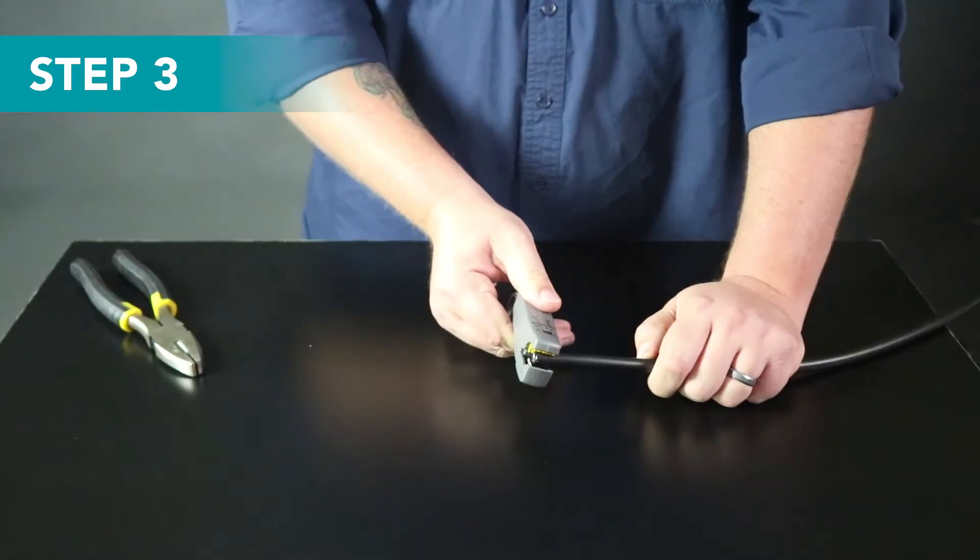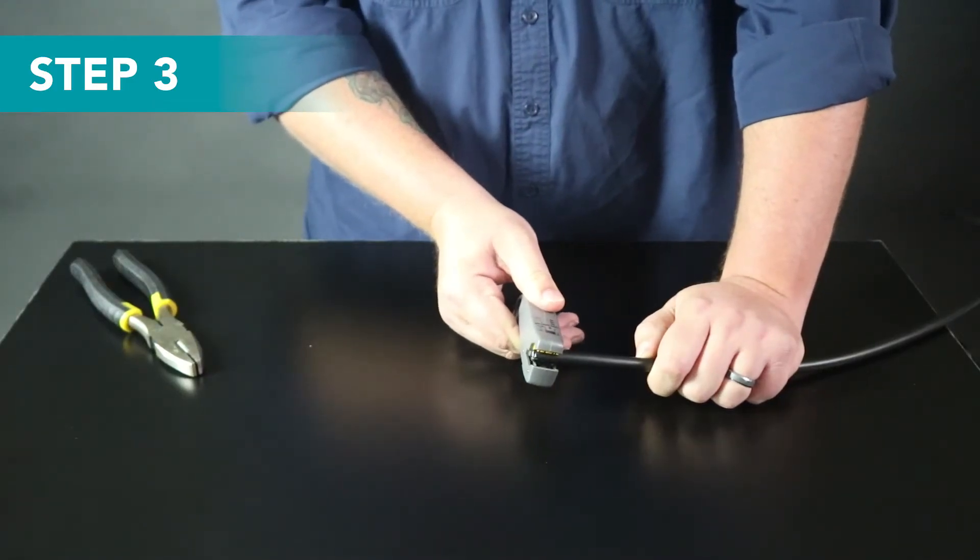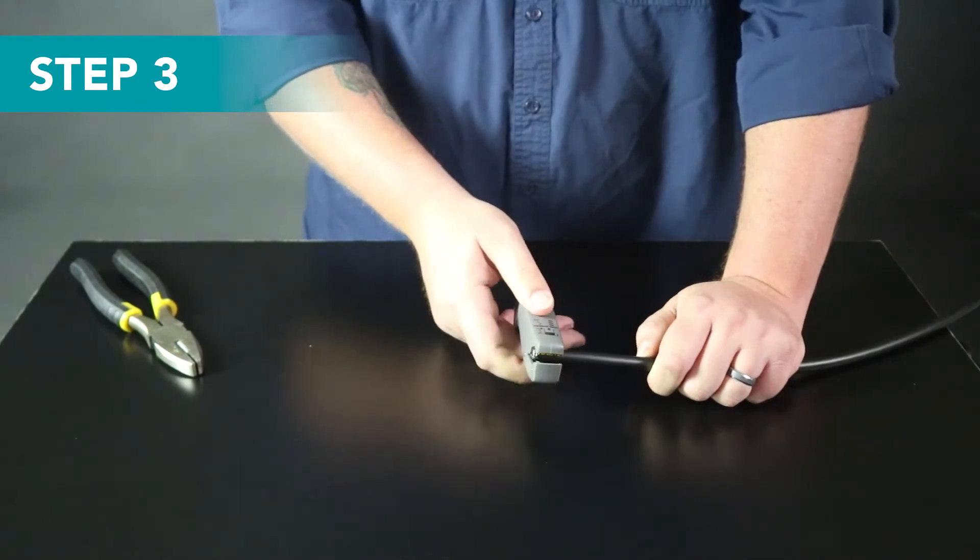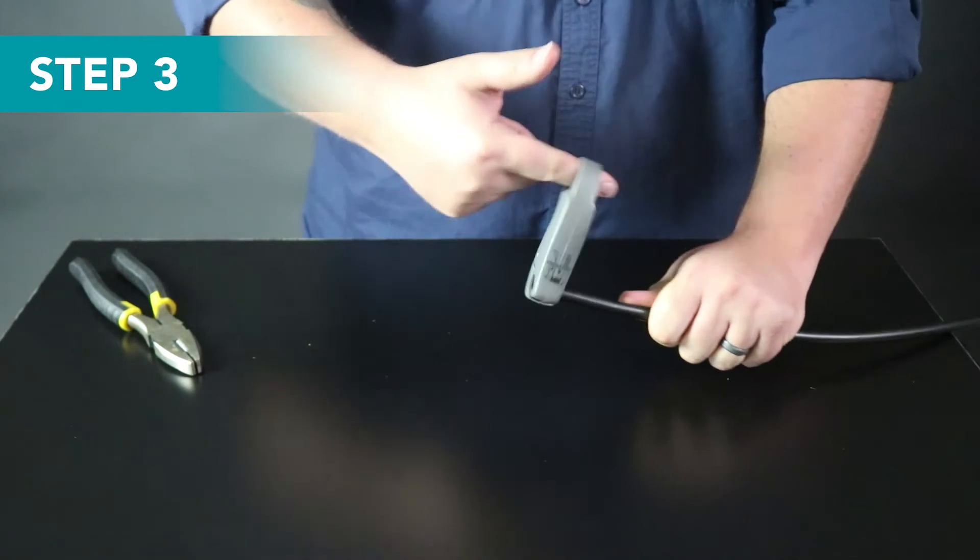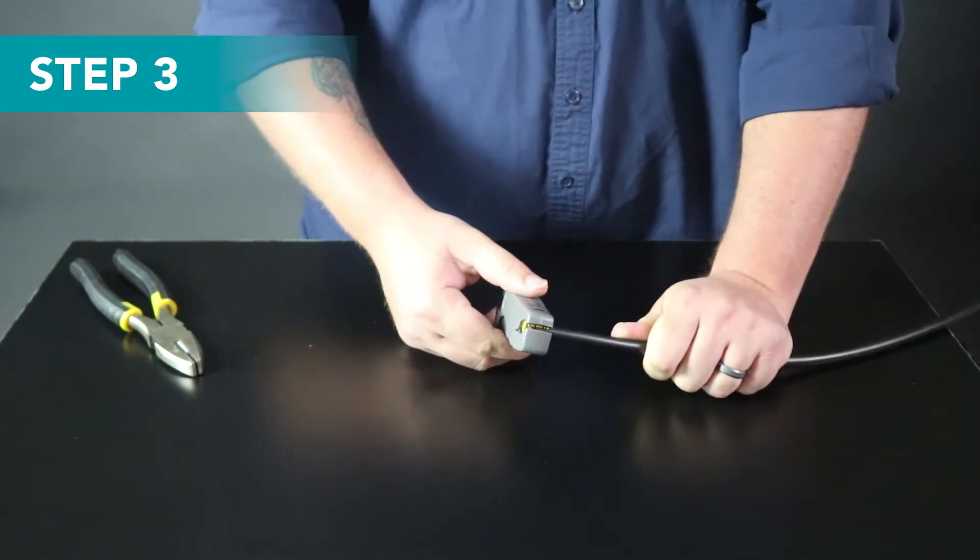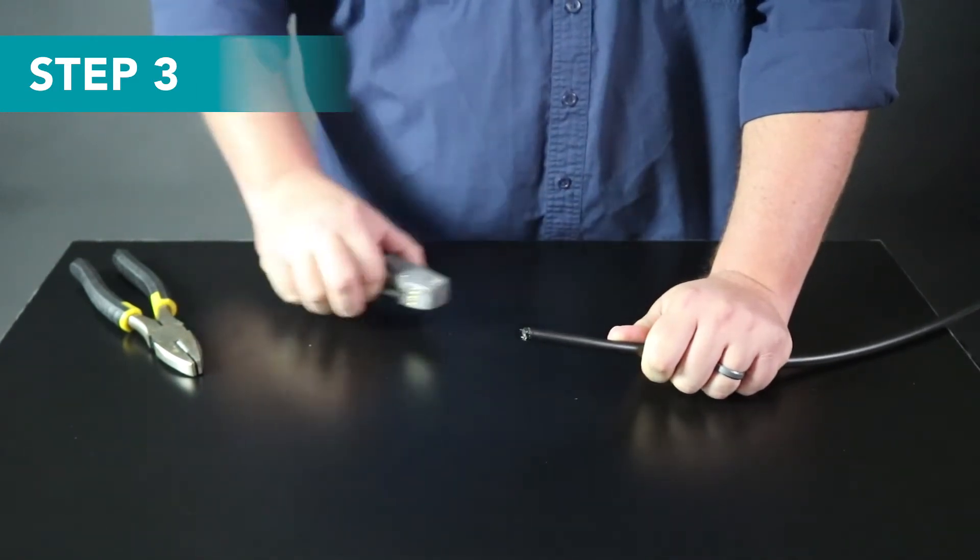Step three, make sure the stripper setting is correct. 400 and RG11 have the same diameter so make sure that your stripper is on this setting. Insert the end of the cable so that it is flush with the end of the stripper. Close the stripper and rotate fully two or three times. Be careful, you don't want to strip the core of the cable. Open the stripper when you're done, do not pull it off.